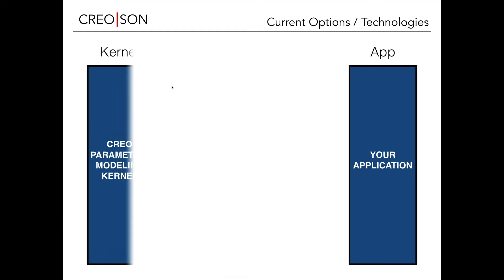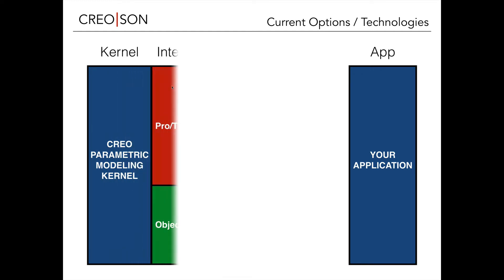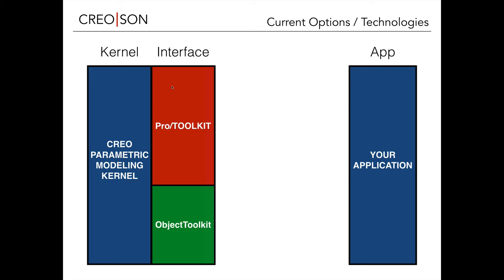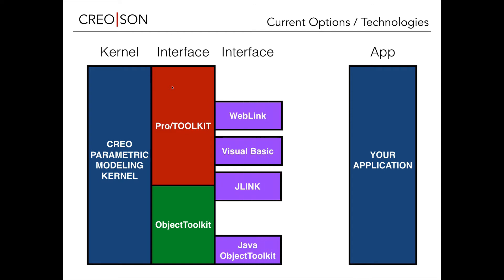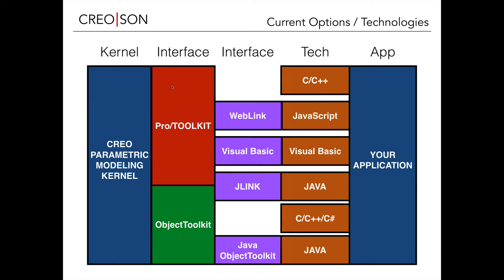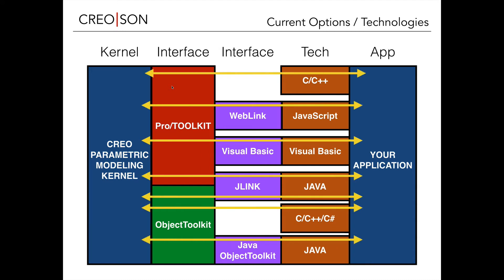The current technologies and options used to create applications to the Creo parametric modeling kernel are really across two different interfaces mainly these days: ProToolkit, which is the old interface being replaced by ObjectToolkit, and then a whole host of other interfaces that sit on top of those. You have your technical stack — whether it's C, JavaScript, Visual Basic, or Java — it's up to you to choose. There are different levels of capability depending on which path you choose, and basically there's bi-directional communication occurring between the modeling kernel and your application to get results.